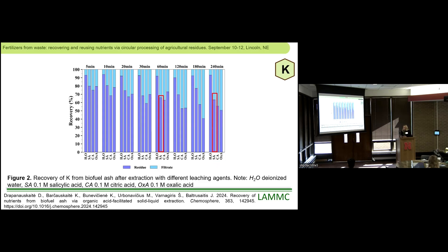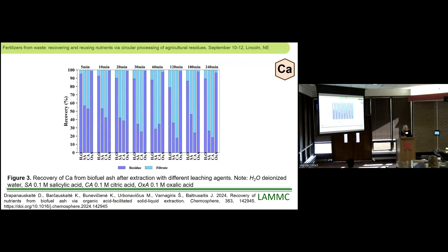Salicylic acid gave around 35% to 37% potassium recovery after one hour and after three hours. But the highest recovery was obtained with oxalic acid at around 57%. For calcium recovery, the highest was with citric acid after two hours — around 82% was released to the filtrate, and just 18% of calcium was left in the solid part.